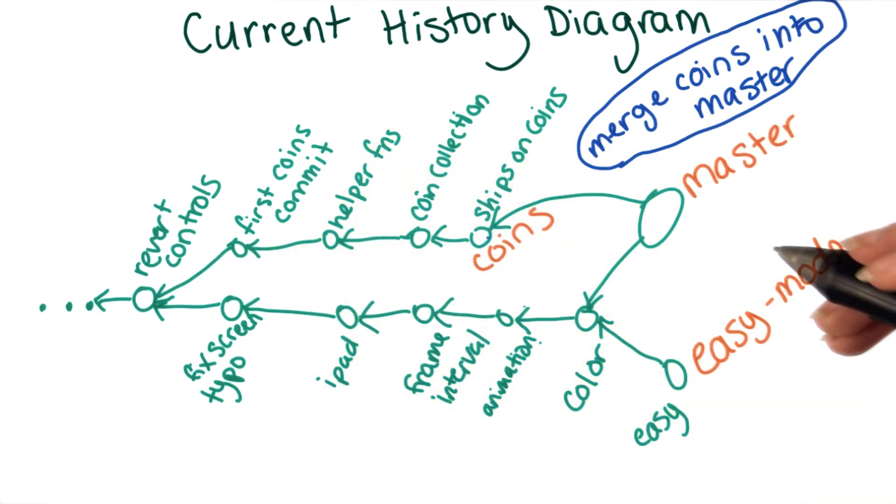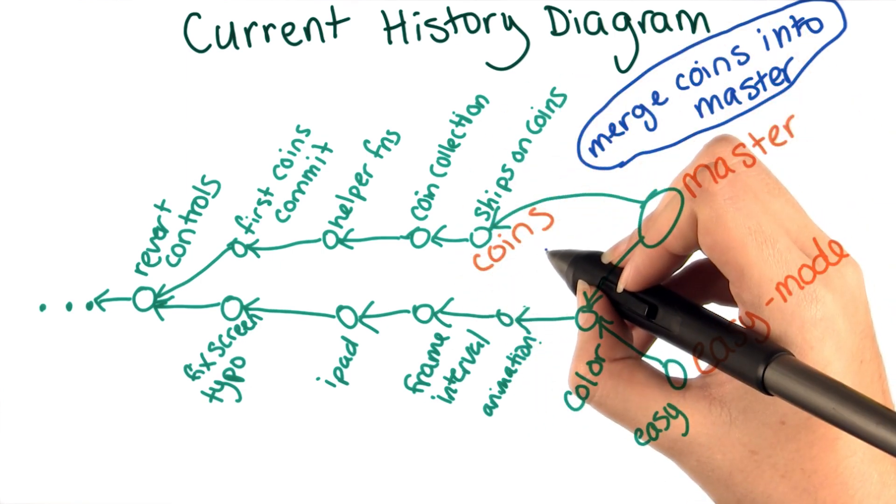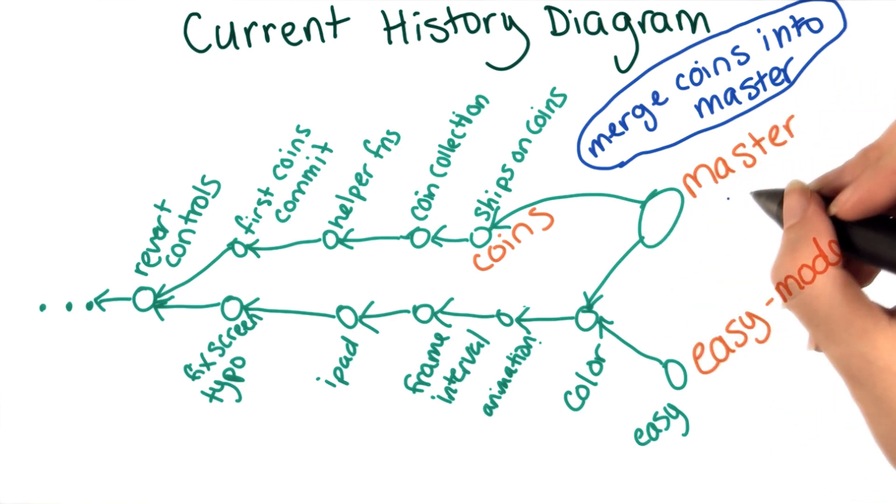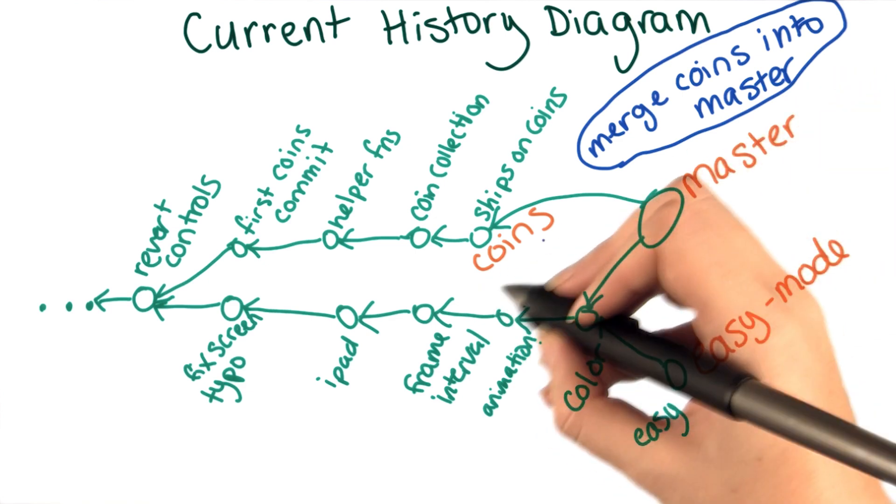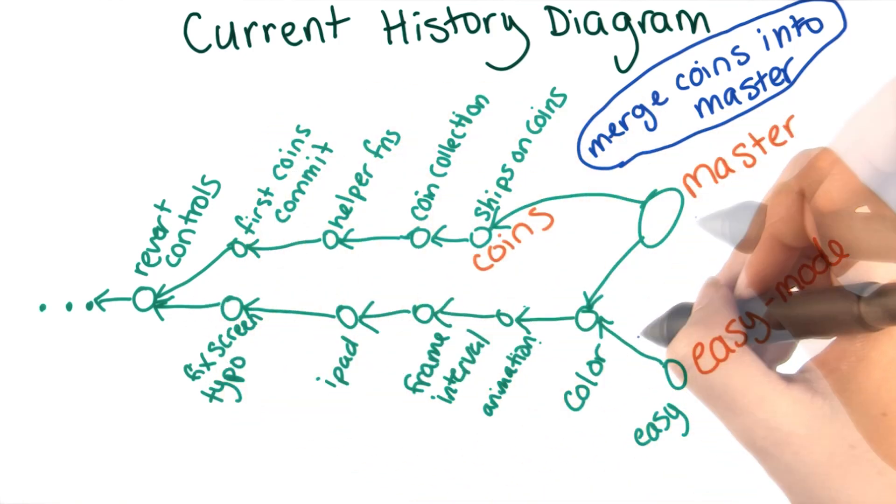Note that this is very different from what we would see if we took the state of the files at this point, at the end of the coin branch, and made a commit with that on top of master. All that would do is basically set master to be the same state as coins. But that's not what we want to do. We want to have all of these changes merged in as well.